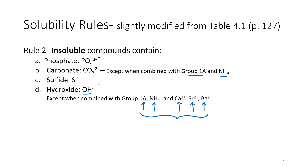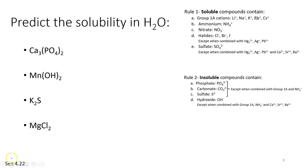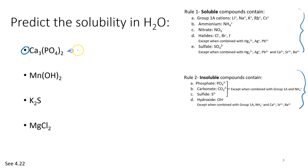Let's get some practice applying these rules. I've listed the rules here just in case we need to refer to them. Our first compound is calcium phosphate. We have a rule for phosphates — all phosphates are insoluble except when combined with group 1A or ammonium. We are not combined with 1A or ammonium, so this would be insoluble.